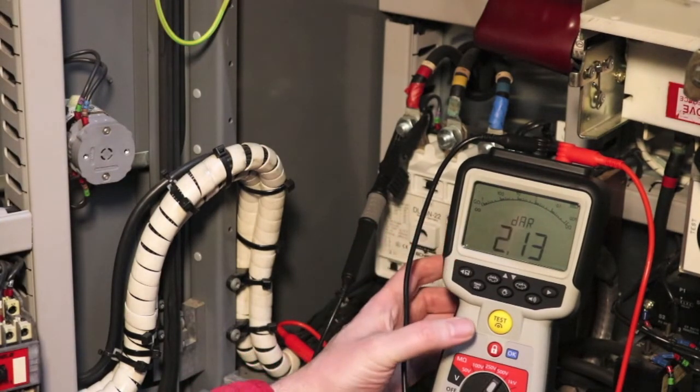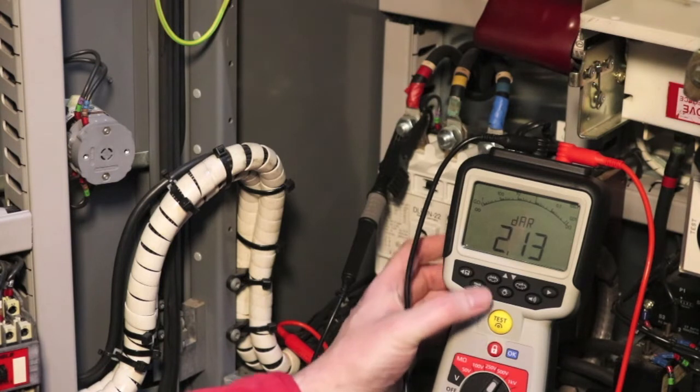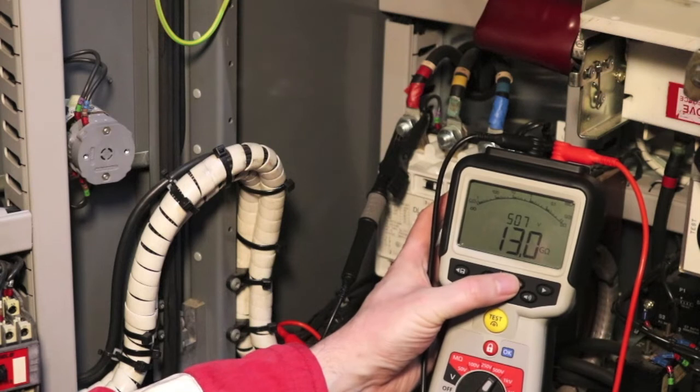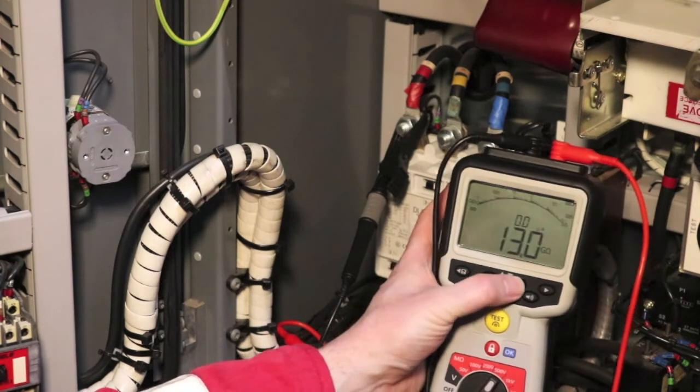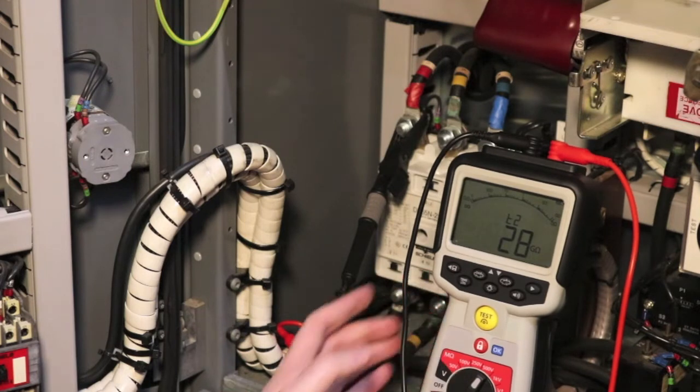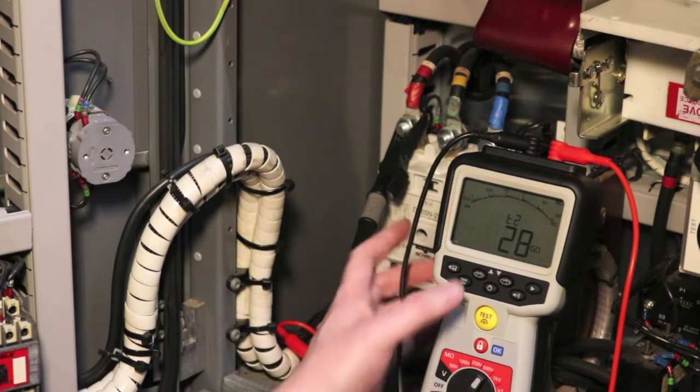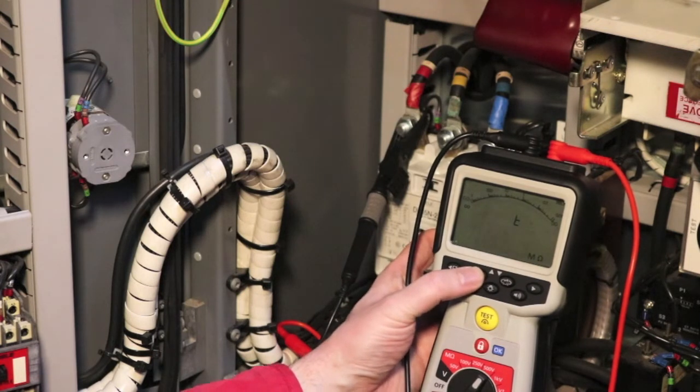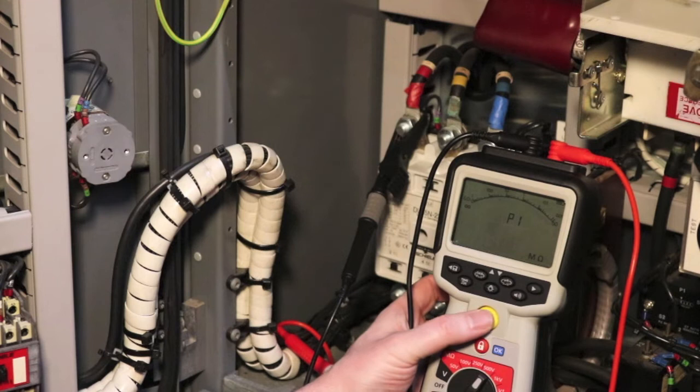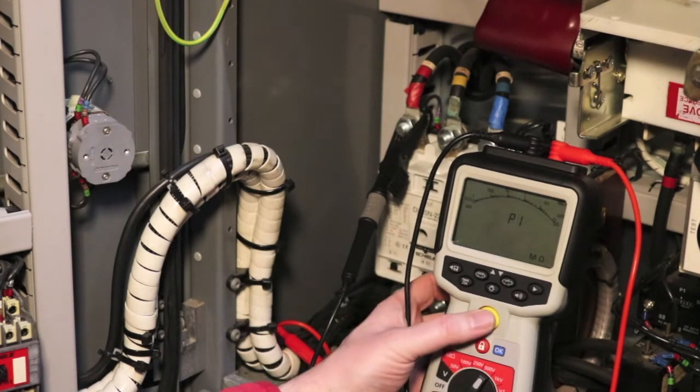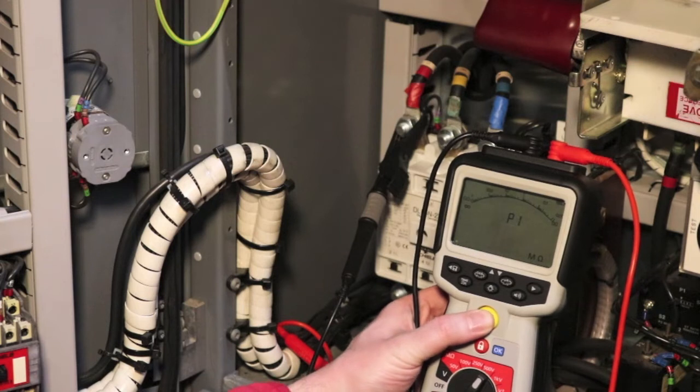So we'll save that reading there and then using the function button I can work my way through all the readings that it took at the 30 second and the 60 second and record the values and the voltage that the test was completed at. So once we've done that, use the function button and we'll set up for a polarisation index test and then we can start that one. Again it will be at 500 volts.